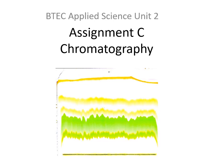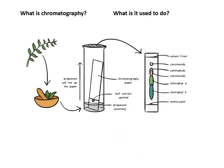This is B-Tech Applied Science Unit 2, and this video is about Assignment C, which is chromatography. So what is chromatography? You probably did it in Year 7 or Year 9 or even at primary school — you got a piece of paper, maybe put some plant pigment on it, or used an ink pen and drew a dot.